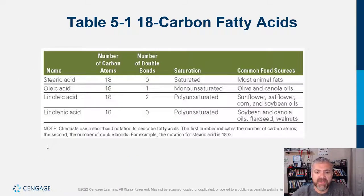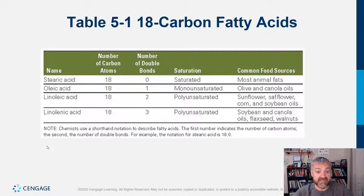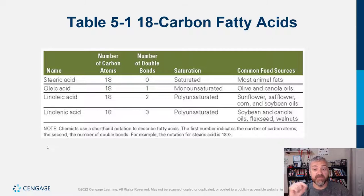Some examples of different types of fats: animal fats are usually saturated fats with zero double bonds — stearic acid is a good example. Oleic acid, found primarily in olive oil, is a monounsaturated fat with one double bond. Linoleic acid is a polyunsaturated fat with two double bonds, coming from soybean and corn oils — that's an omega-6 fat. Alpha-linolenic acid, from flax seeds and walnuts, is an omega-3 fat with three double bonds.